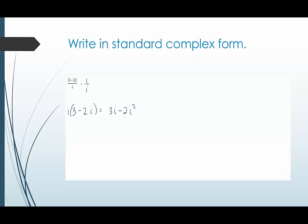i squared is equivalent to negative 1. So this would become 3i and then this is negative 2 times negative 1. So that would become plus 2.